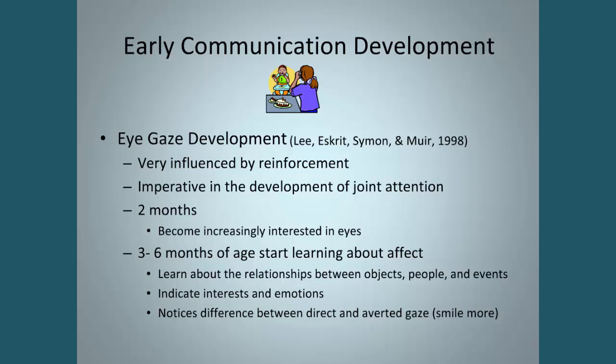In talking about early communication development, we need to begin with eye gaze. Many of you might think that's odd, but if you remember from your language development courses, how we develop language is a combination of joint attention and symbols on top of it. So mom and baby are both looking at the bottle, and mom says 'bottle.' The baby then starts really understanding that the word 'bottle' is the symbol for that object that gives them milk. Therefore, joint attention is imperative in language development, and it begins very early and is very influenced by reinforcement.